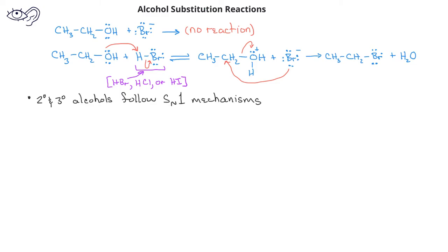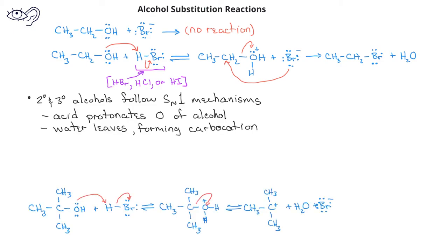Secondary and tertiary alcohols will follow SN1 reaction mechanisms with the hydrogen halides. In this mechanism, as discussed previously, the acid protonates the more basic oxygen atom. Water leaves forming a carbocation. And then the nucleophile, in this case the halide ions, will add to the carbocation.